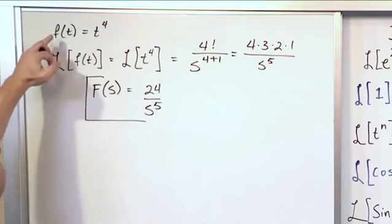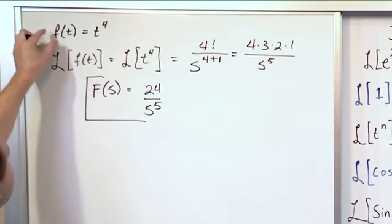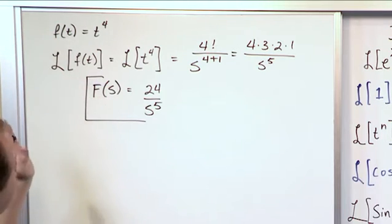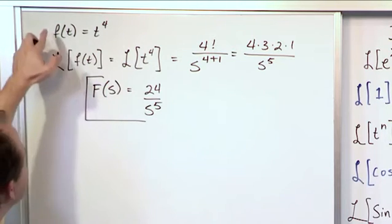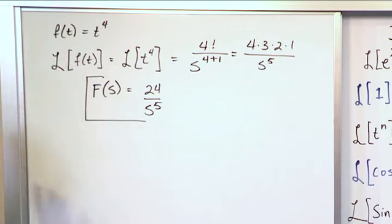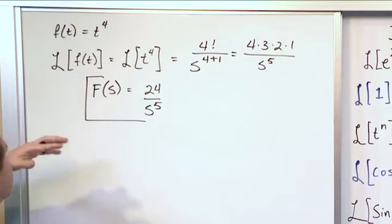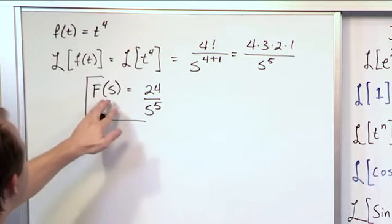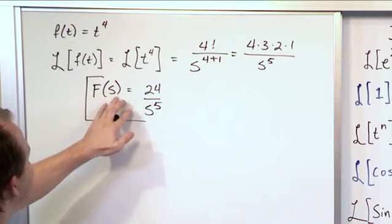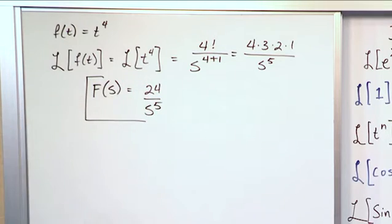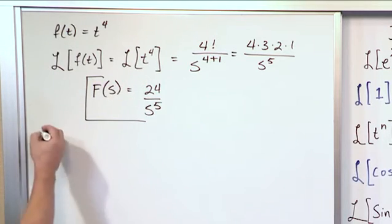So that's why we say function of time, function of s. The lowercase f goes with the capital F — that just lets you know that these are linked by this transform. We use that symbology. But really it's its own independent function of s, representing the function in the Laplace domain, or the s domain.